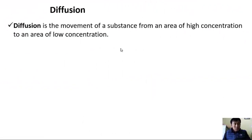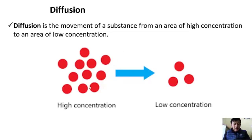First, let's define diffusion. Diffusion is the movement of a substance from an area of high concentration to an area of low concentration. If you look at this diagram, on the left-hand side we see a lot of substances. Imagine these red circles as substances. Since we have more red circles here, consider it as high concentrated area.